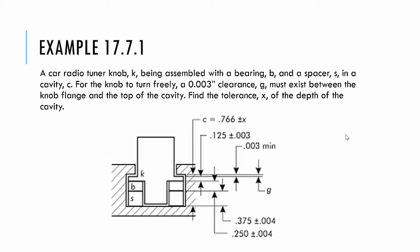We have this example. This is in your book as well. A car radio tuner knob is being assembled with a bearing and a spacer in the cavity. For the knob to turn freely, we have to have a 3 mil, 0.003, clearance between the knob flange and the top of the cavity. So you have to find the tolerance x at the depth of the cavity. So what we're trying to find here is what tolerance can we allow in this dimension here of the cavity.